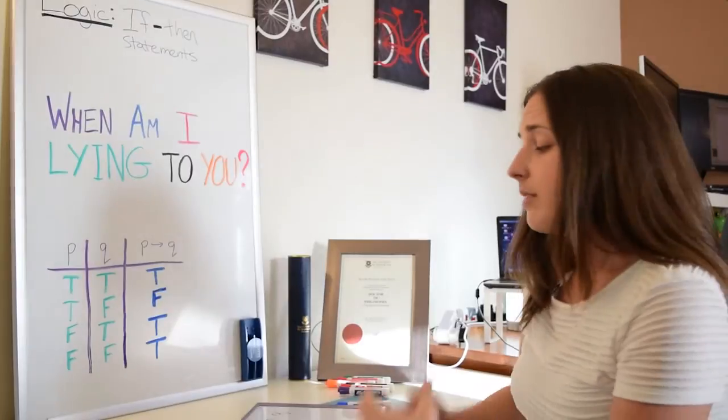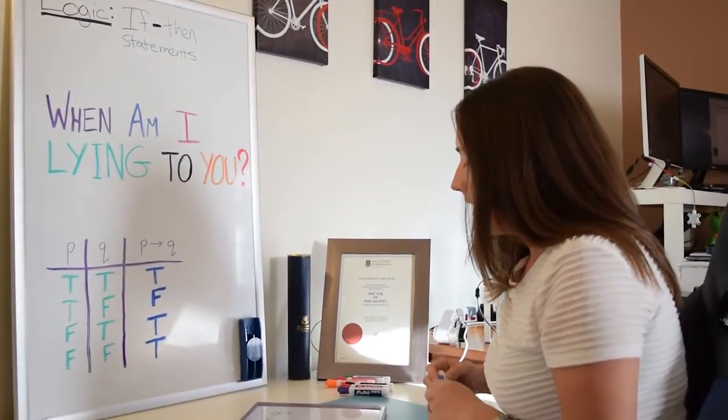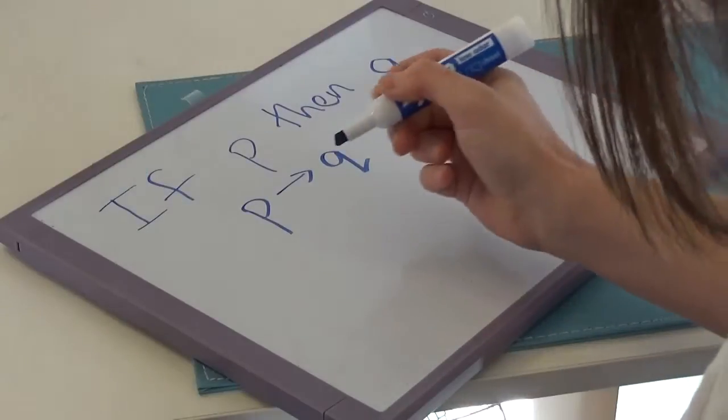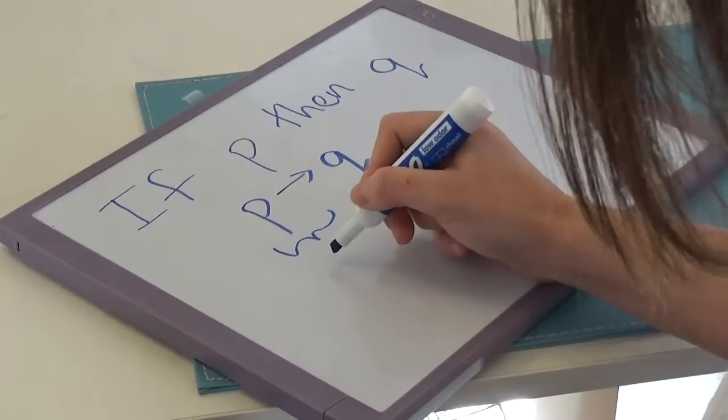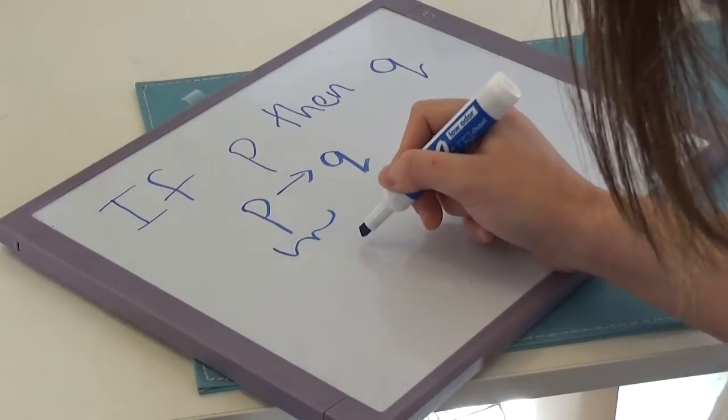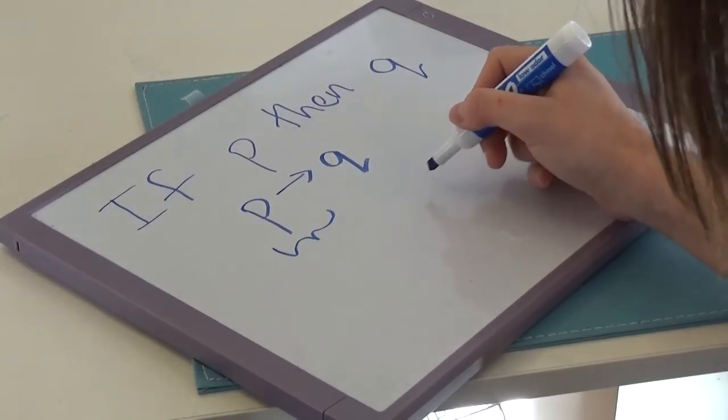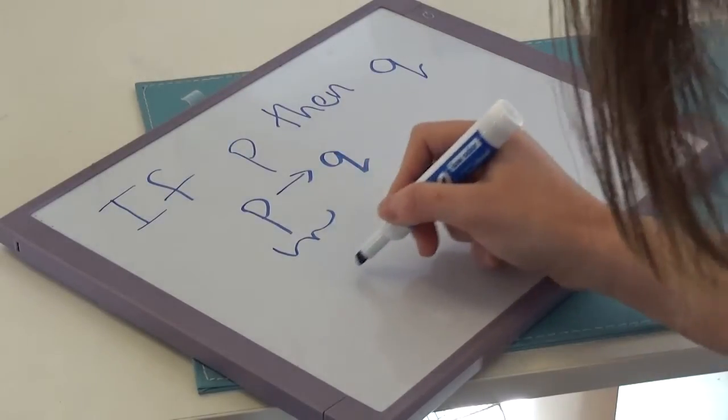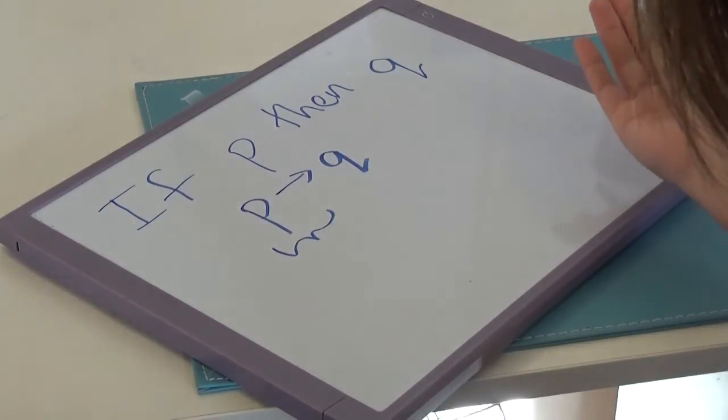Now, keep in mind that in mathematics, if you're trying to prove a statement like this, if P, then Q, what you have to do is to consider all the possible options where P could be true, and in all of those options, you have to show that then Q has to be true. Because if you find any single option where P was true and Q was false, that would disprove the statement.